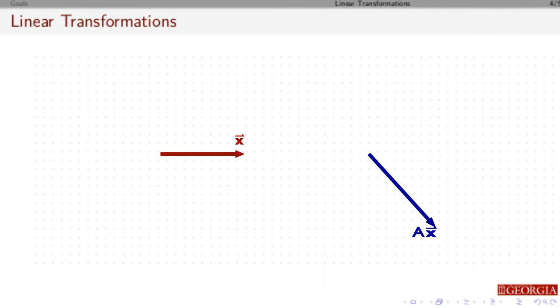I can do this for other vectors x. So if I rotate that vector x so it still has length 1, and then look at ax, I can see what we get.